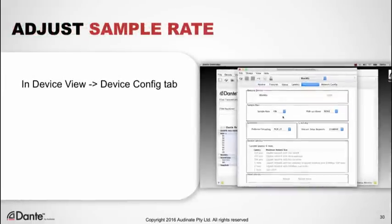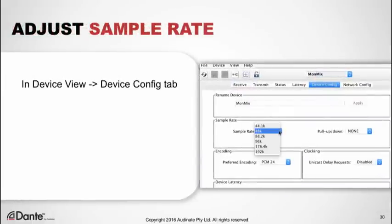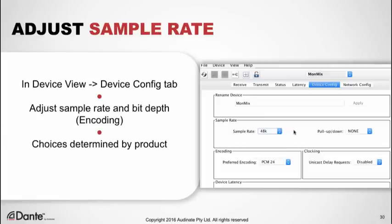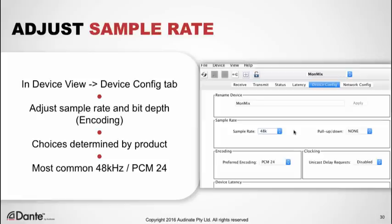In order for Dante devices to successfully subscribe to one another, they must be using the same audio format — in other words, the same sample rate — and this is adjustable for each device in the device view. Double-click the name of the device you wish to adjust, navigate to the device config tab, and adjust the sample rate and bit depth, labeled as encoding. Some manufacturers may only allow certain sample rates and encoding depending on internal support in their product, but by far the most common combination is 48 kHz and 24-bit depth, or PCM 24.